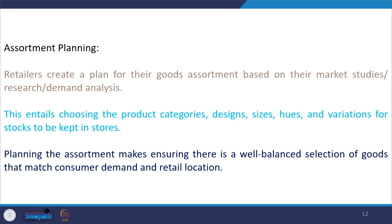You also need to consider the physical characteristics of a store. If your store is large, you can offer a larger assortment; if it is small, you may not be able to offer as many product categories. To sum up, when retailers create a plan for their assortment, they need to base it on the demand analysis conducted at the earlier stage.